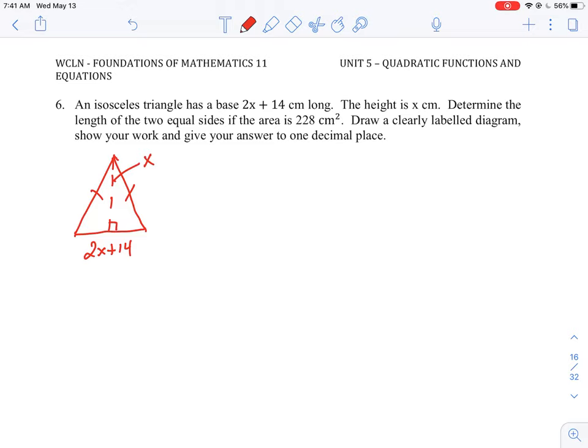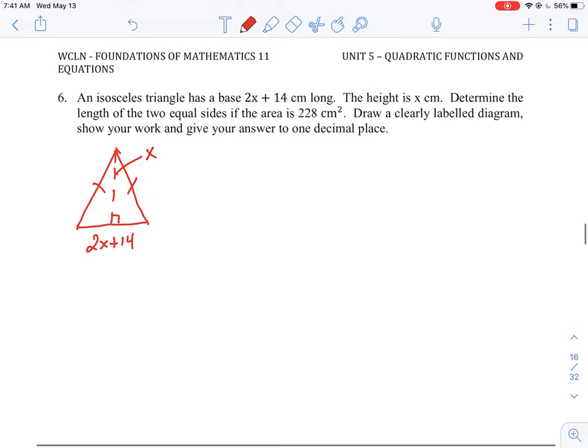Okay, so to solve for this, we do know the area. We know from our equation that area of a triangle is base times height divided by two. And that whole thing is equal to 228.